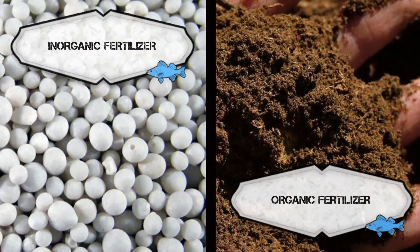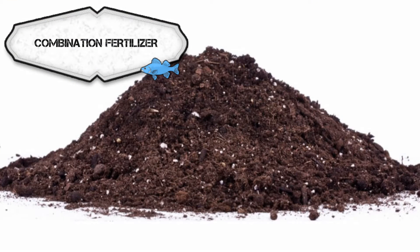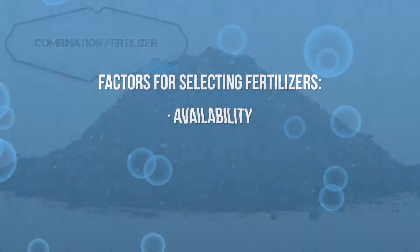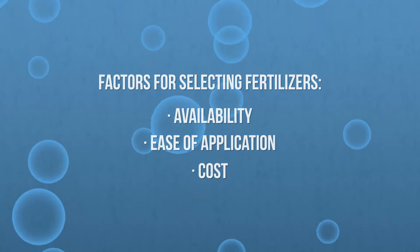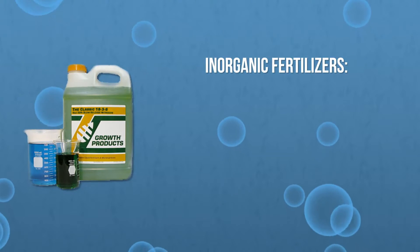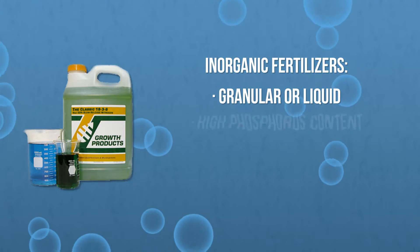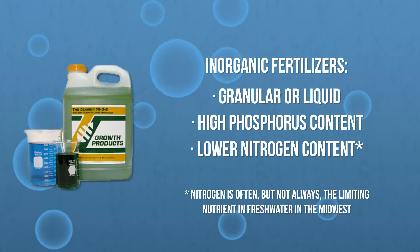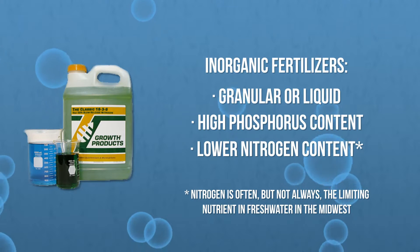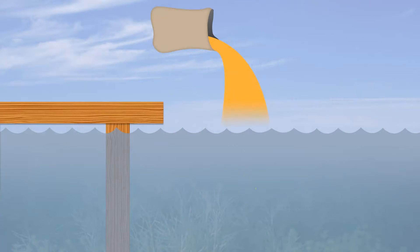Fertilizers may be either inorganic or organic based. There is little research-based information available to determine which performs best; in fact, a combination of the two is often used. Inorganic fertilizers take the form of granular or liquid fertilizers, having a high phosphorus content and, to a smaller degree, nitrogen. Nitrogen is often — but not always — the limiting nutrient in freshwater in the Midwest. The premise behind using inorganic fertilizers is that by applying needed nutrients, phytoplankton populations rapidly increase.